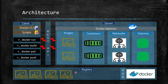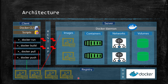When you run 'docker run' or 'docker pull', if the image is already in your system it won't be downloaded. If it's not there, Docker downloads it from the registry. Then it sends the image to the server so the daemon can create a container. When you run 'docker push', it pushes the updated image to your configured registry.